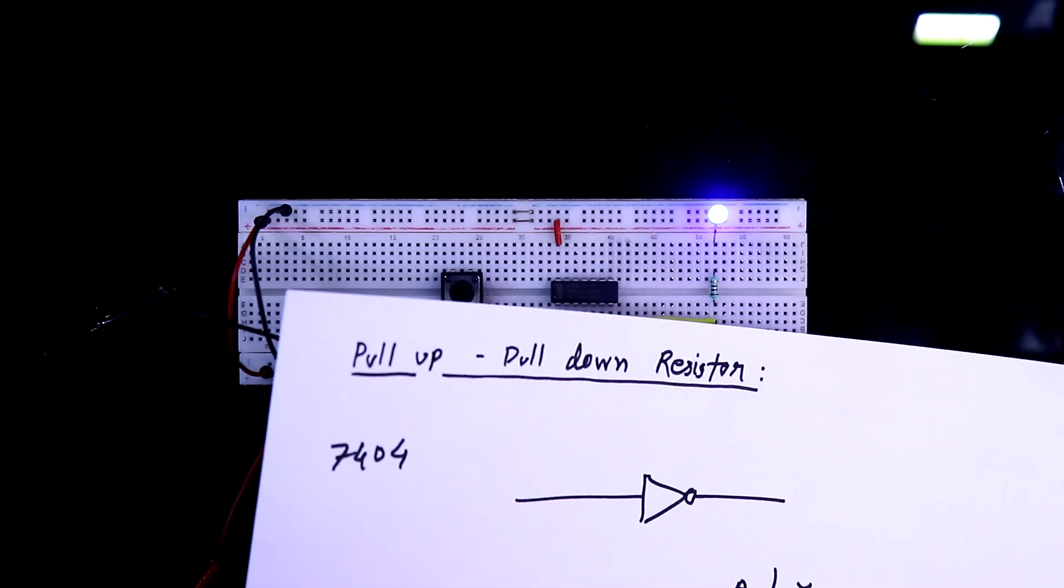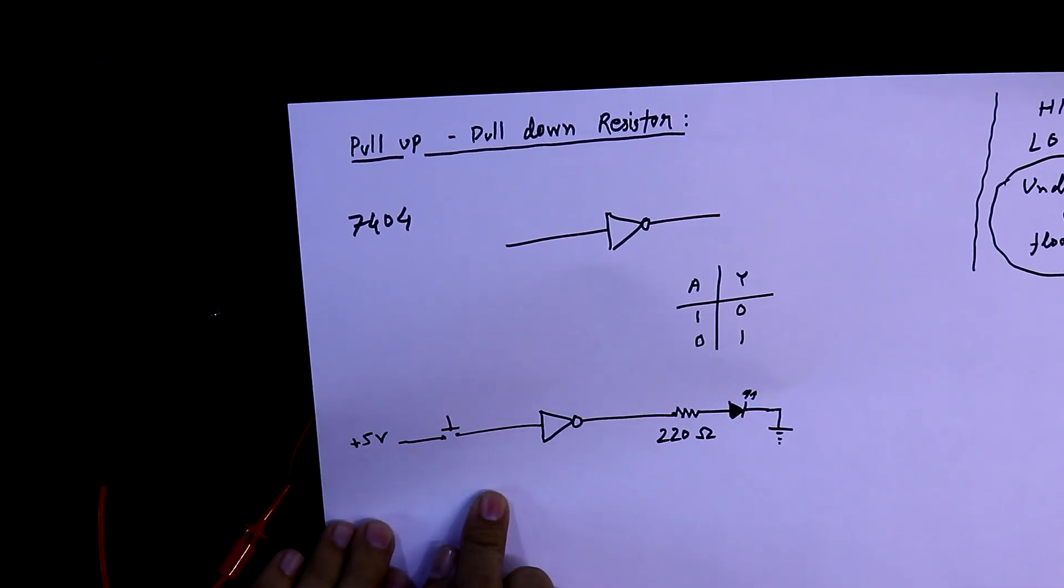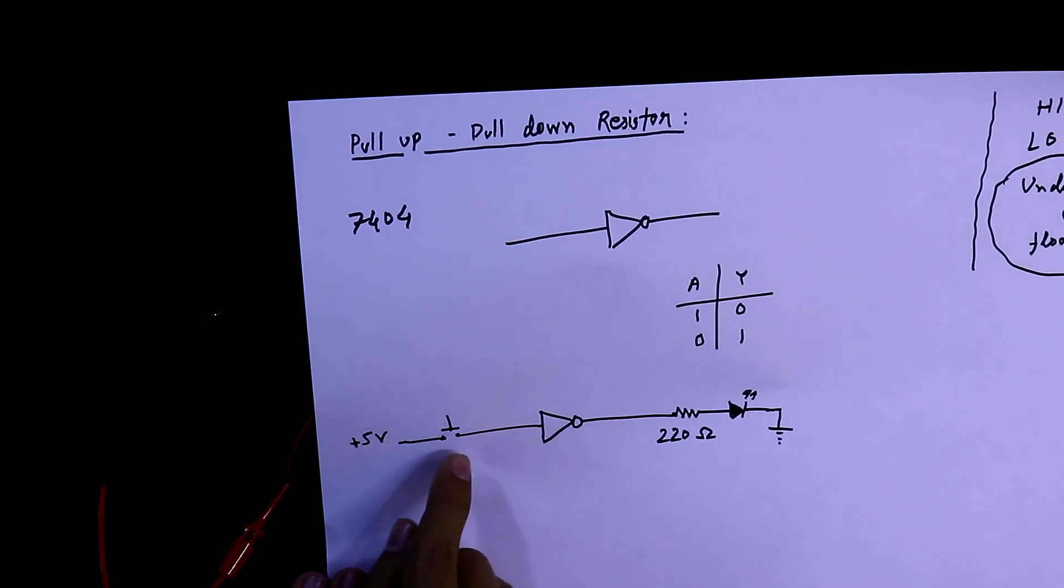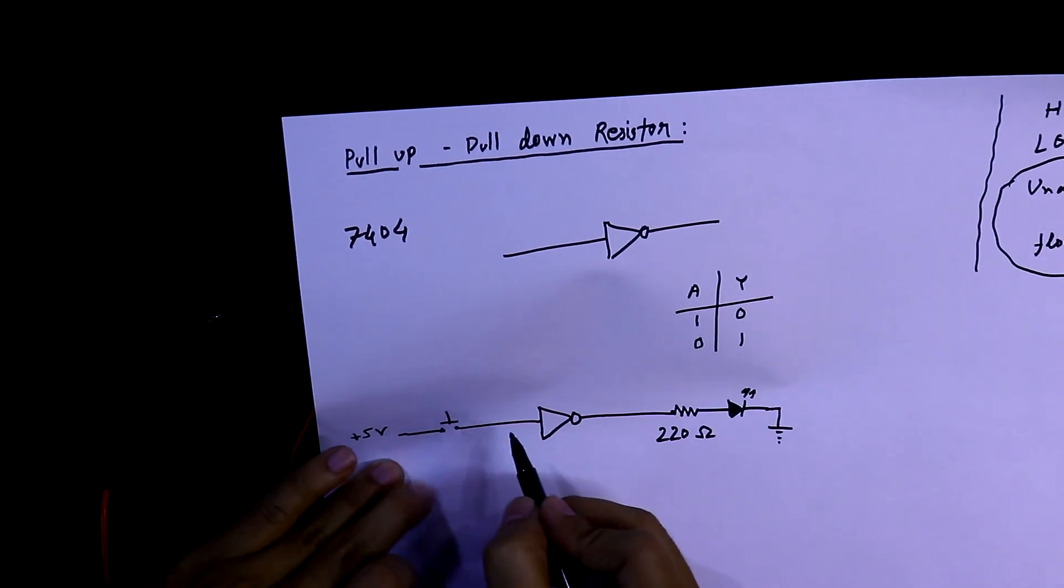So if we use the pull-down resistor, after pressing the switch, if the input is connected with high signal, then we have to use the pull-down resistor. So in this condition, we have to use pull-down resistor.